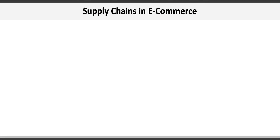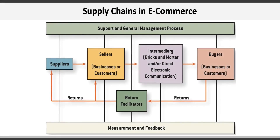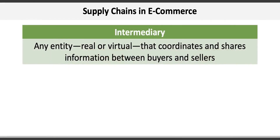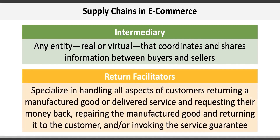E-commerce has also greatly influenced the design and management of supply chains. An e-commerce view of the supply chain includes the familiar players of suppliers, sellers, and buyers, plus two additional players: intermediaries and return facilitators. Intermediaries are entities — either real or virtual — that coordinate and share information between buyers and sellers. For example, doing business in Taiwan or China is generally done through an intermediary that assists with local laws, language, and cultural differences. Return facilitators specialize in handling customer returns, repairs, and service guarantees — for example, Zappos relies on UPS and FedEx as their return facilitators.